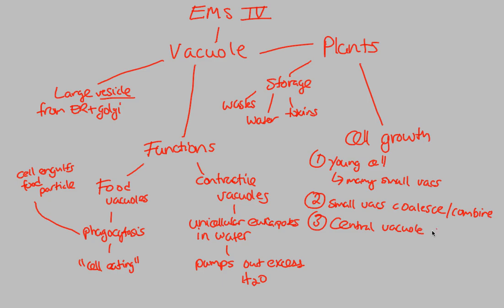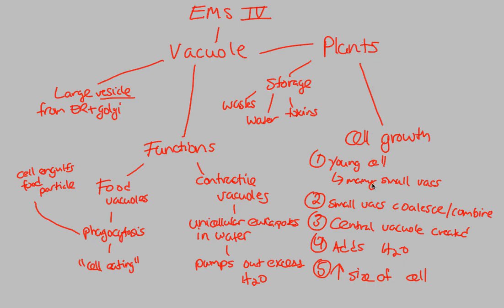Once the central vacuole is created, the plant literally adds water (H₂O) into it. Because it is now larger, the central vacuole — the whole being greater than the sum of its parts — actually increases cell size. Cell size is increased because of this combining effort of putting all the small vacuoles together to create one large central vacuole. When you look at a plant through a microscope, one of the most emphasized structures is the large central vacuole.